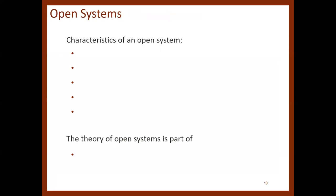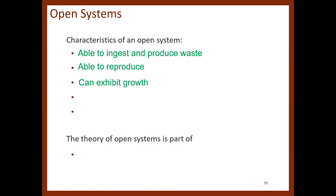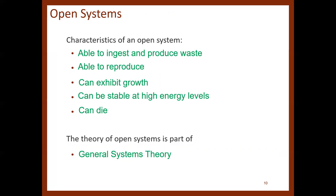What are the characteristics of an open system? They are able to ingest and produce waste, able to reproduce, can exhibit growth, can be stable at high energy levels, and they can also die. The theory of open systems is part of general system theory, and these characteristics are tied to what we know as system thinking.